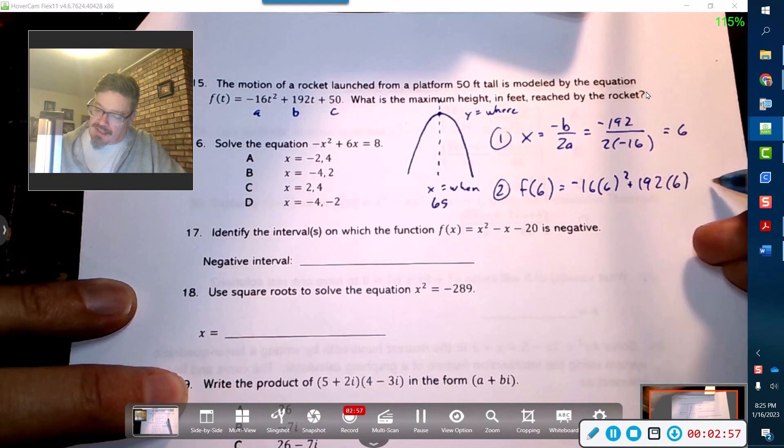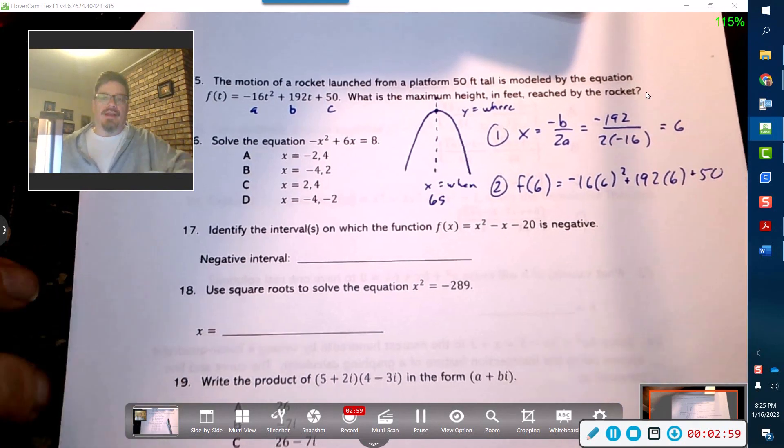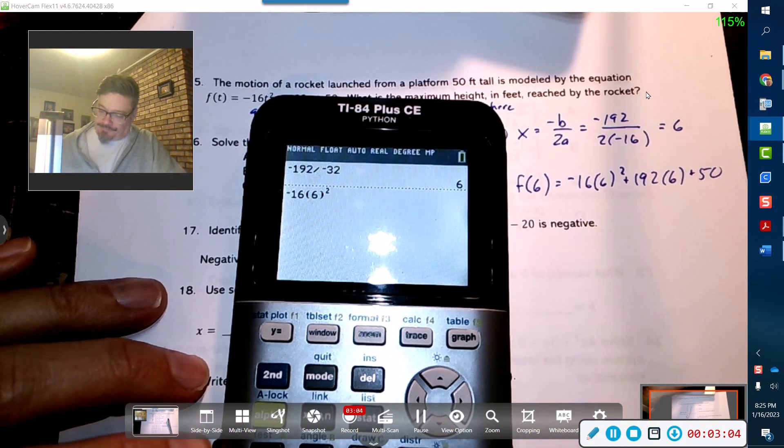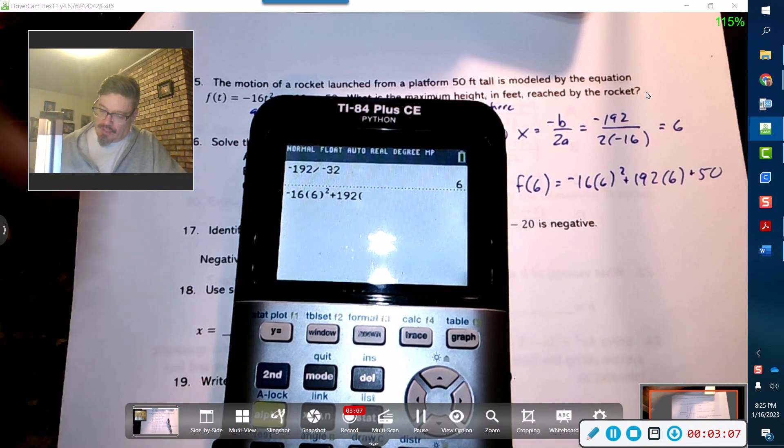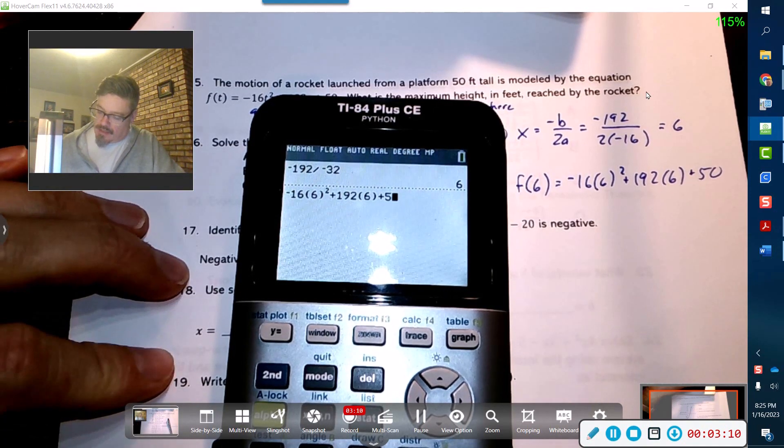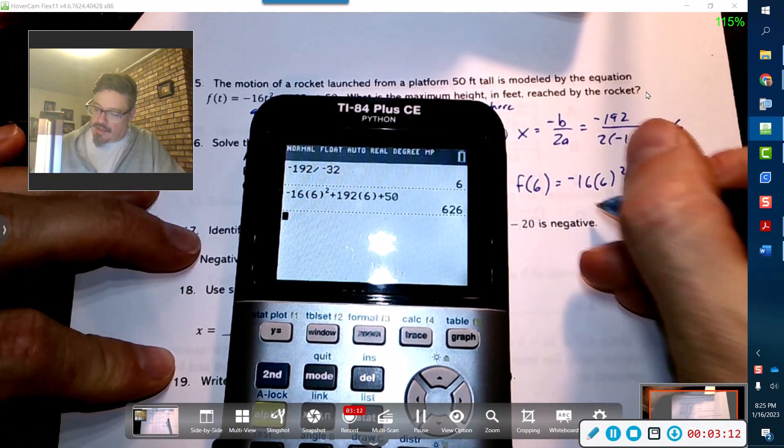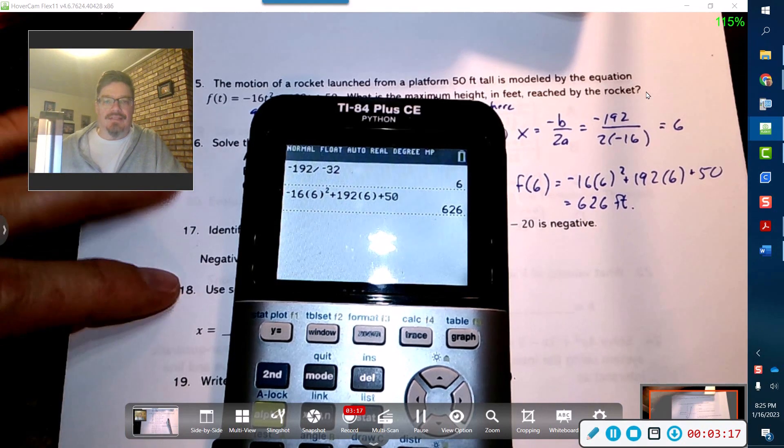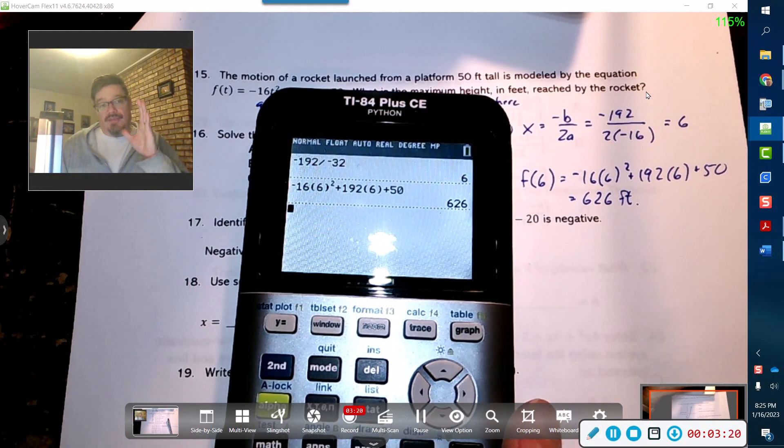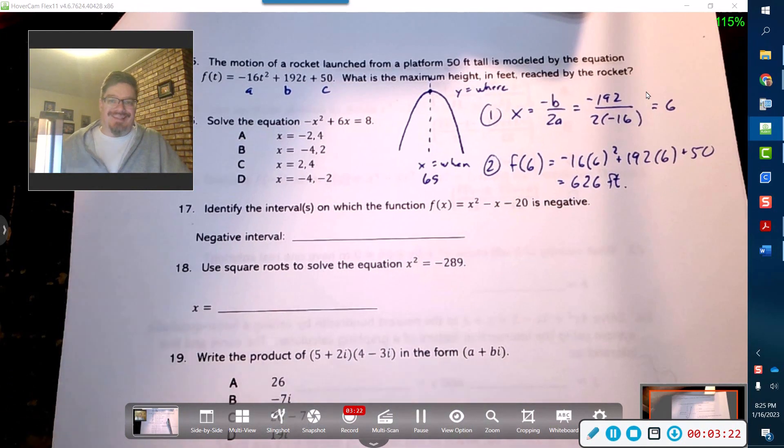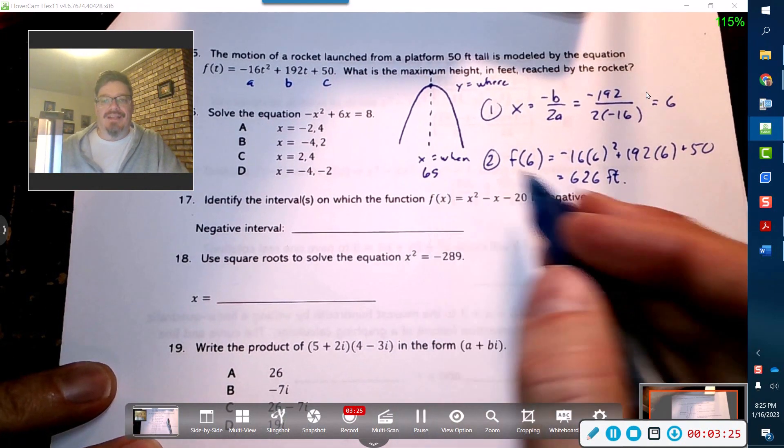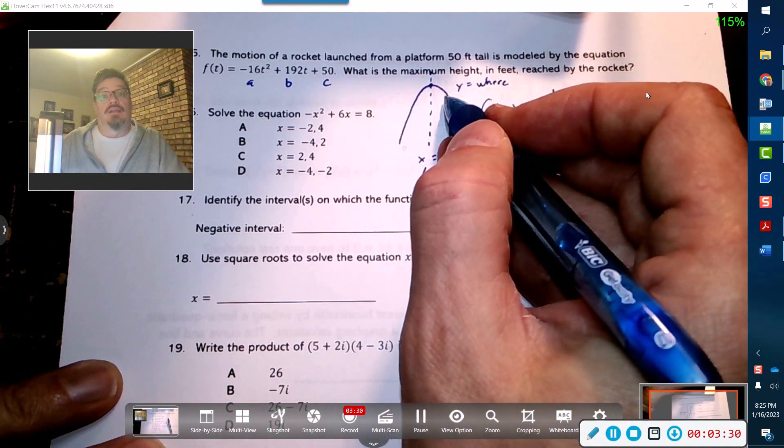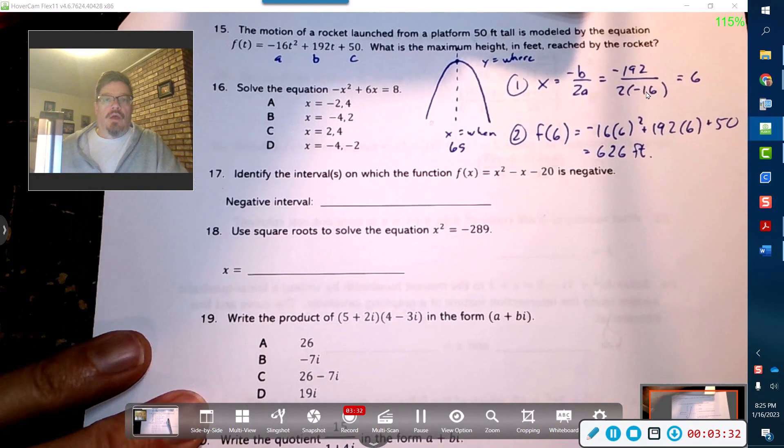I'm not going to do that in my head for sure. You might hear Gumball in the background, that's because my boys are obsessed with it, they won't stop. All right, so that's 626 feet, that's how high it got. Then it reaches its maximum and then starts its descent down. You'll notice that if I plug in a seven, it's going to be lower than 626 because it's going to start its downward descent. So that is the answer for number 15.